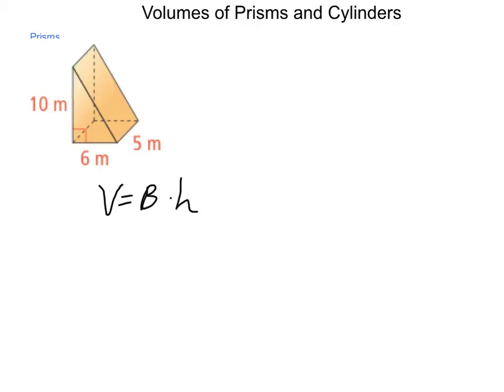Because it is a triangular prism, the base is the triangle. So that's one-half the base of the triangle and its height times the overall height or distance between the two triangles.